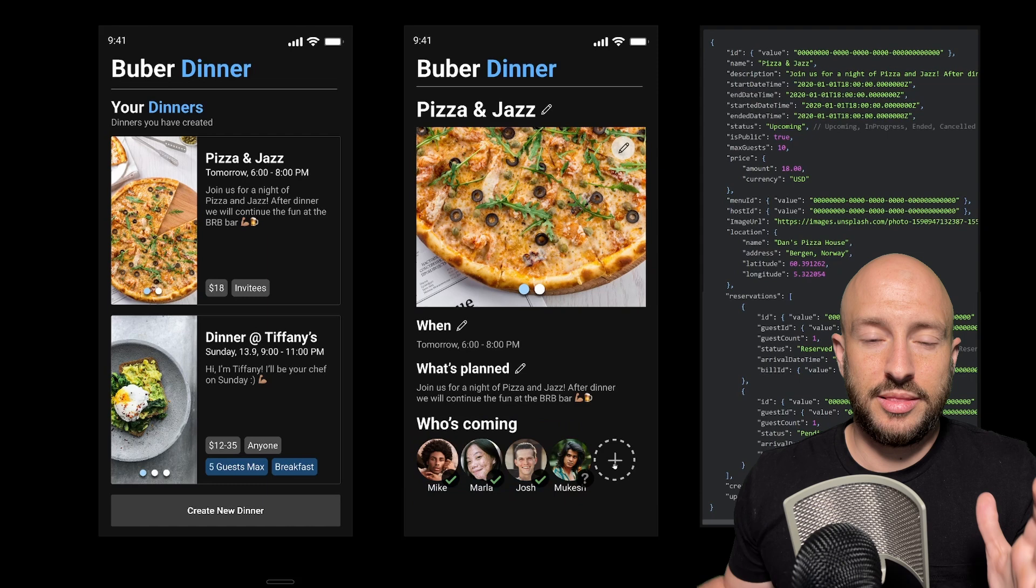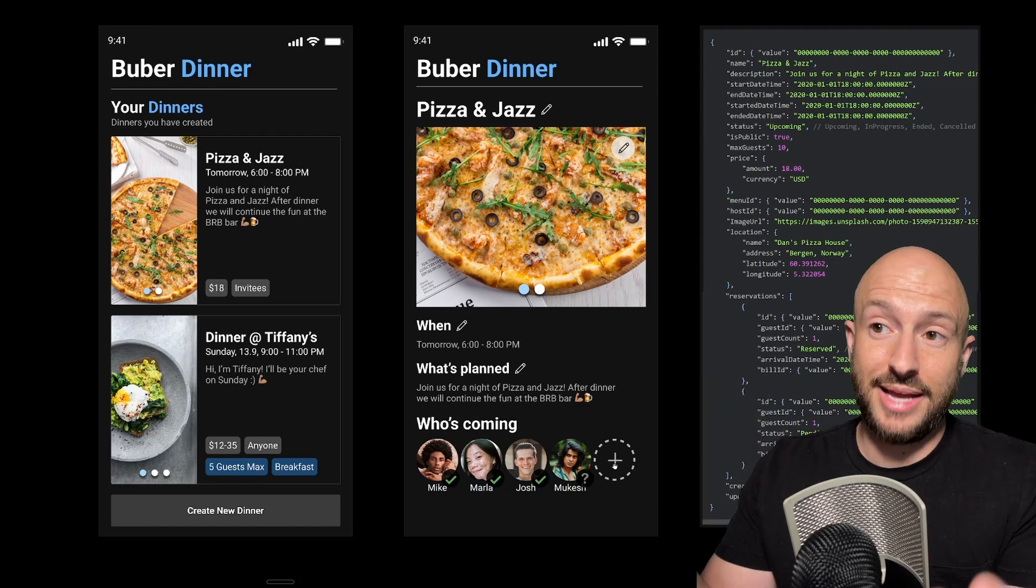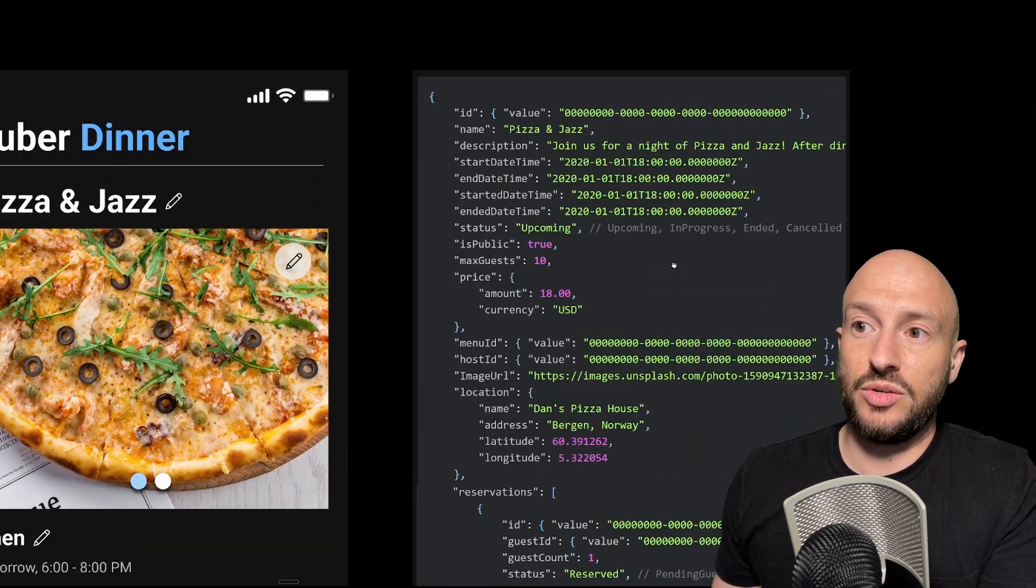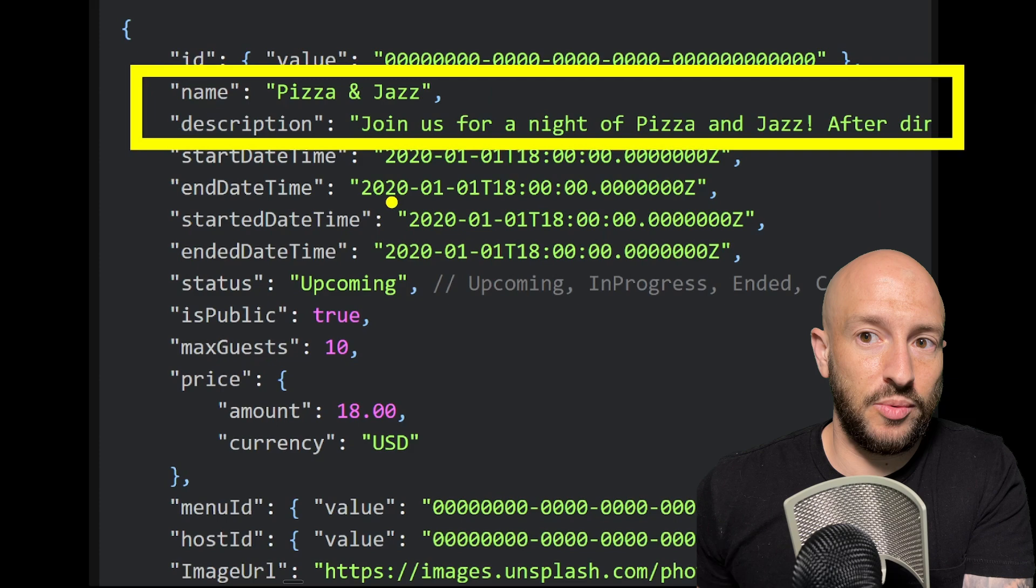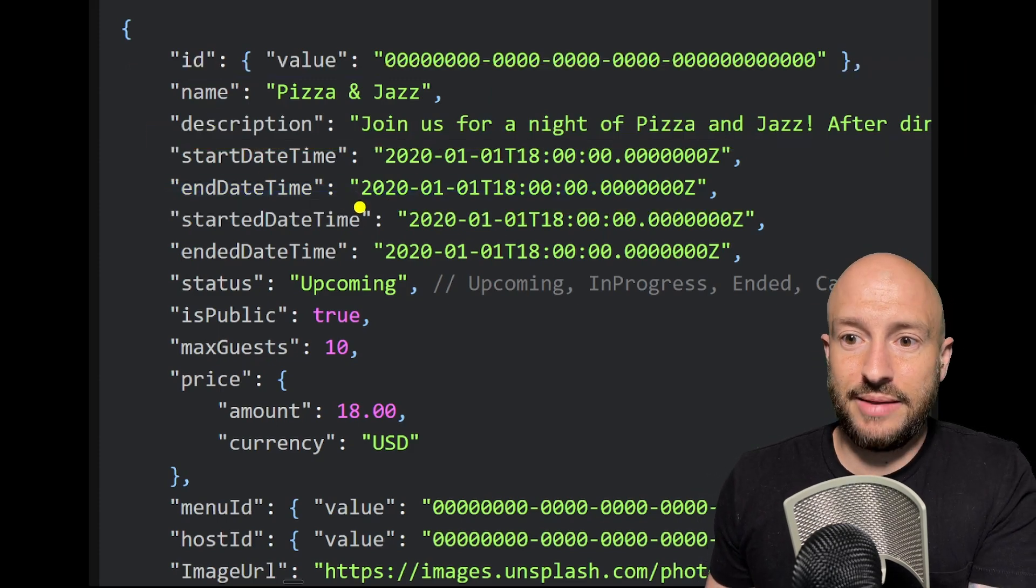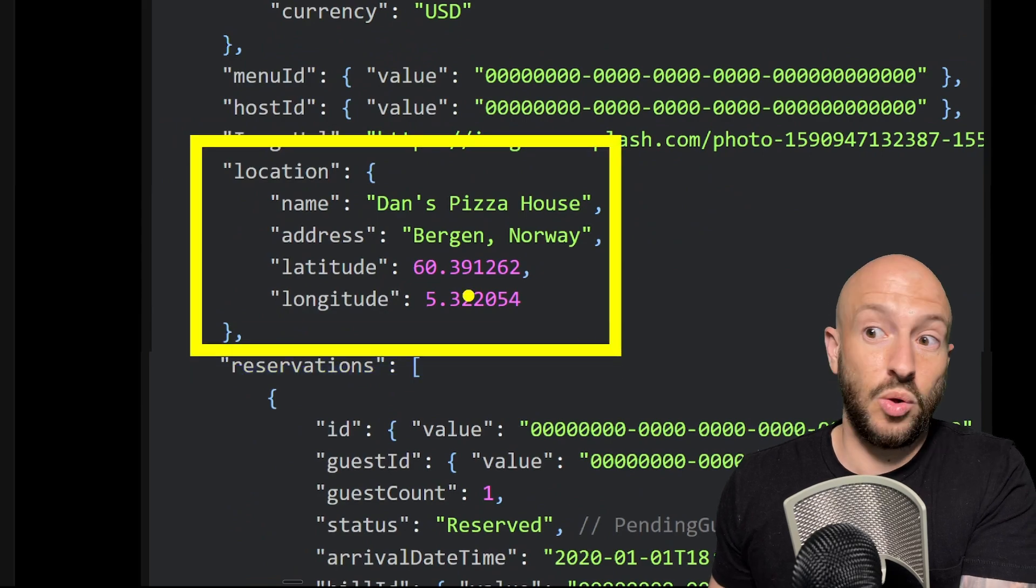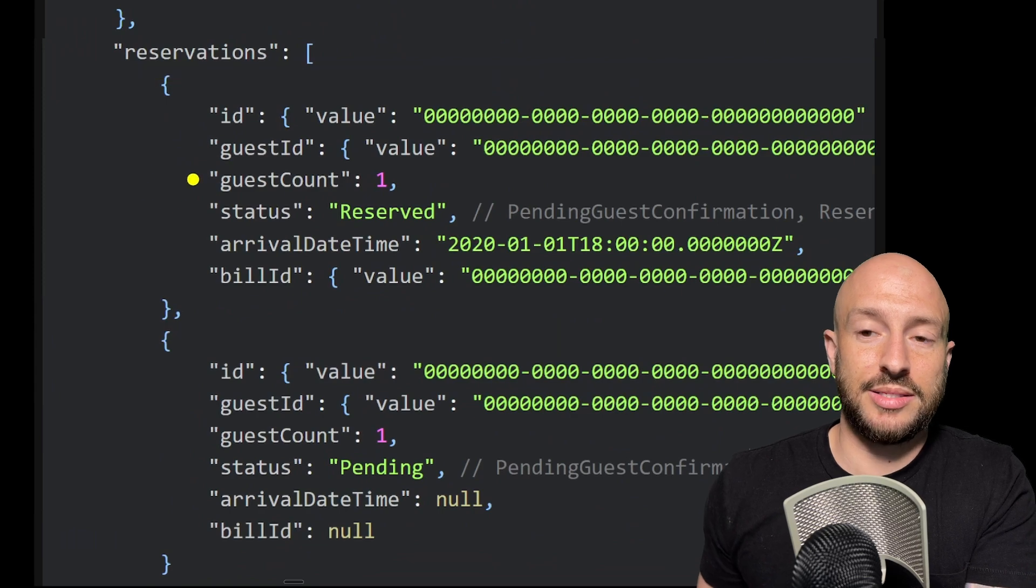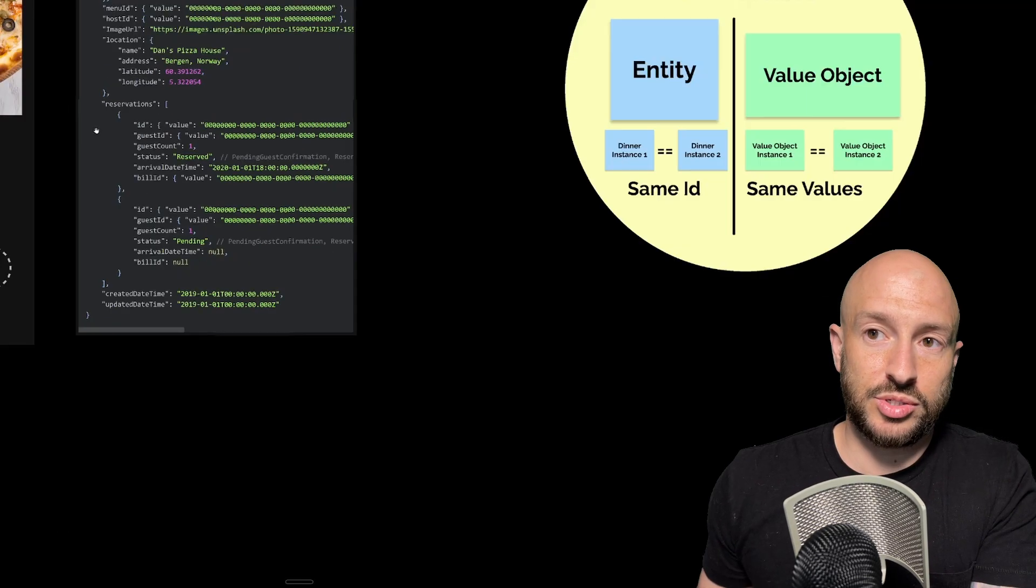Looking at this, let's imagine how the model of the dinner behind the scenes of this UI would actually look like. So let's imagine we have something like the following. The name and description that we looked at is available. We also have the start and end date time. Then we also have here some other stuff like the location of where it is. We also have the reservation, which has some details like the guest count, who's the guest that is reserving, and some other stuff.